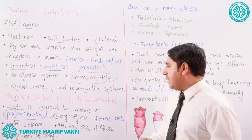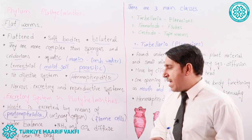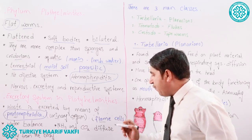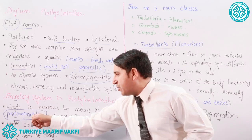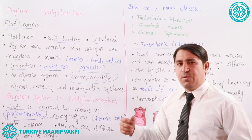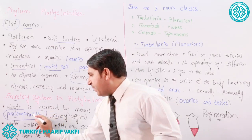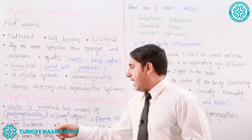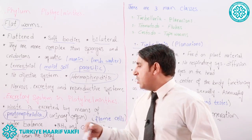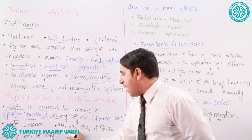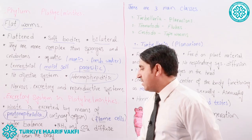If we look at the proto-nephridia, in this structure we can see some cells called flame cells. Flame cells — their motion is like the motion of fire flames. So in proto-nephridia we can see the flame cells, and their function is removing waste products from the body. Proto-nephridia also balance the water level in the body, because when they remove waste products, the water balance is controlled by these structures.